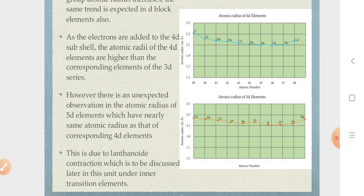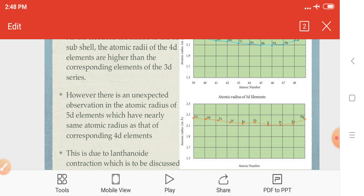Study of decrease of M3+ cations as we move down the group is called Lanthanide Contraction. In the topic of Transition Elements, let's discuss. Thank you, students.